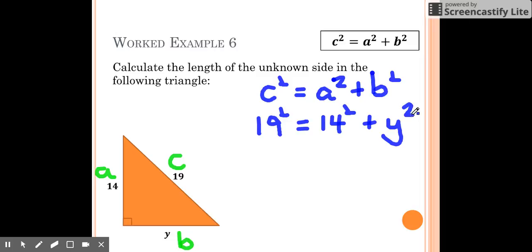Now we can do it in a few different ways. We can find out what these squares are and then we can rearrange, which is how most of you will feel most comfortable. So let's find 19 squared.